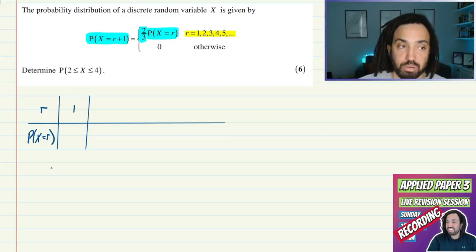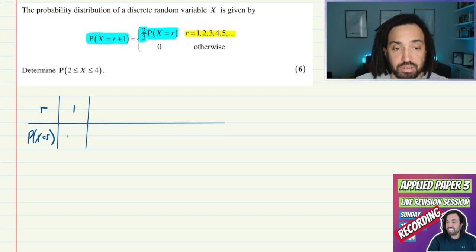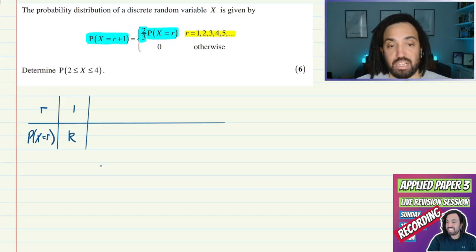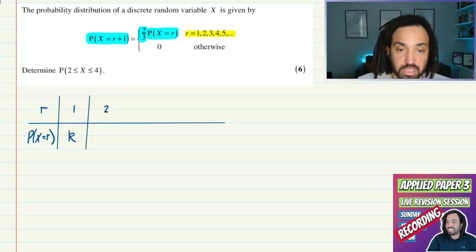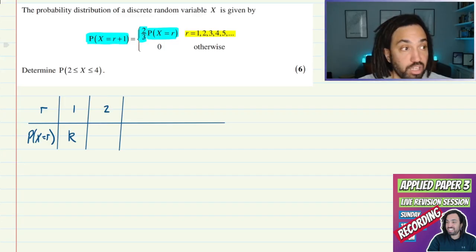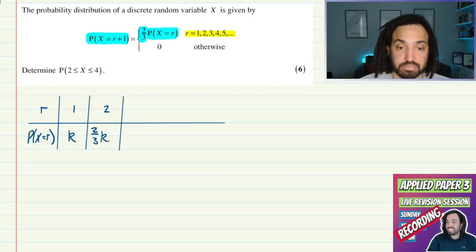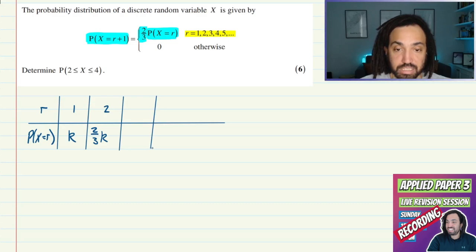We don't really get any hints about what that is. All we know is that the probability afterwards will be two thirds of the one previous. So let's call the first probability just k and see where we go. So the next probability when r is 2 is going to equal two thirds of when r was 1, so this is going to be two thirds of k. And then the next probability when r is 3 is going to be two thirds of that, so that'll be 4 ninths.